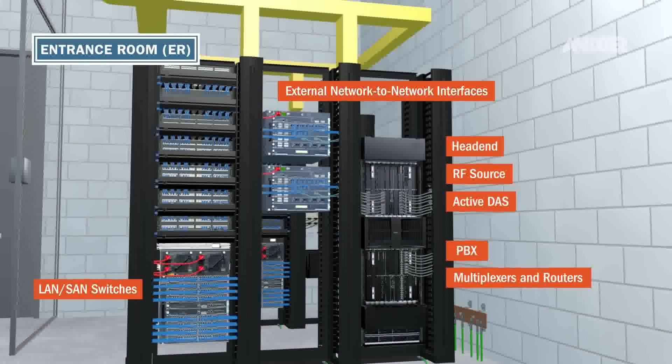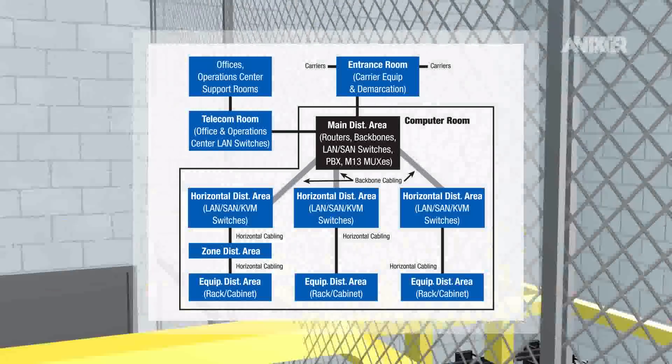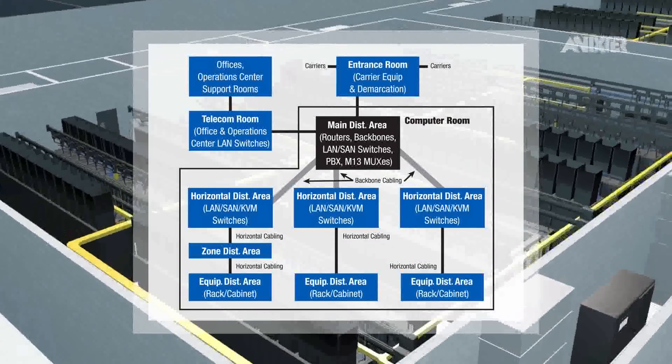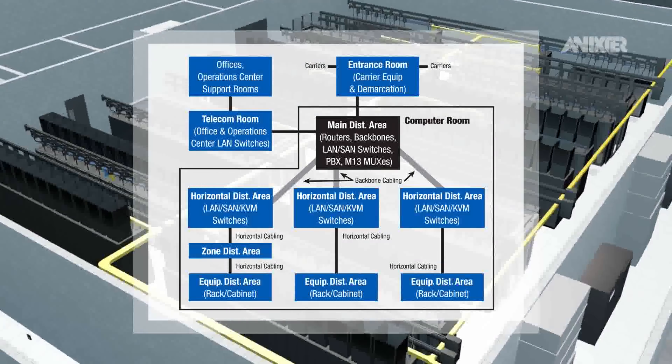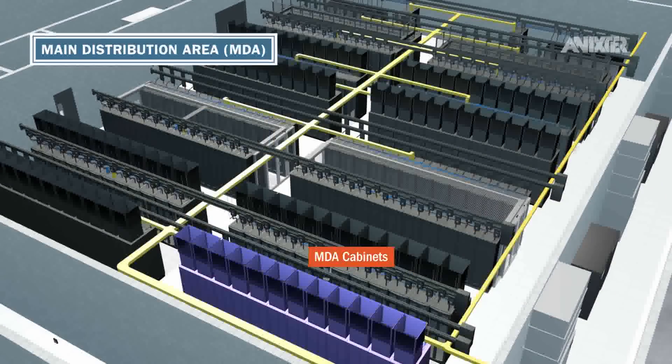The entrance room is connected to the main distribution area, which houses the core layer equipment such as routers, LAN and SAN switches, PBXs and MUXs.